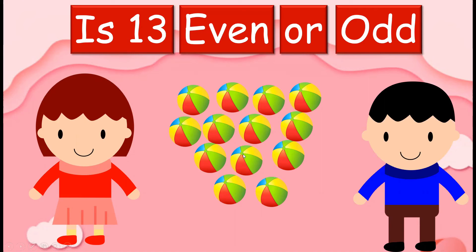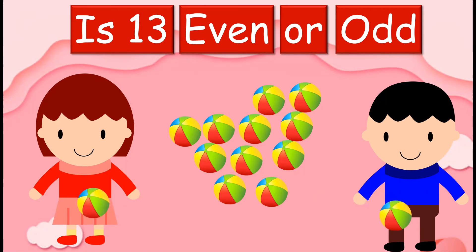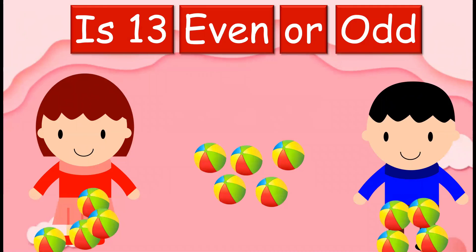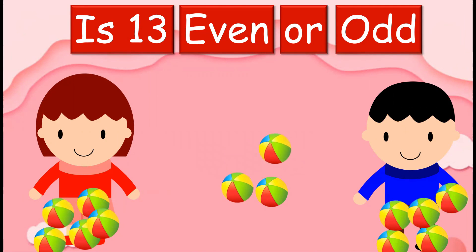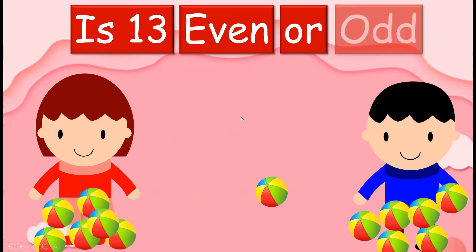Now we are going to make the balls as partners. If all the balls are having partners, then it is an even number. If there are no partners for one ball, then it will become an odd number. Let's see if the balls are having partners. Yes — 1st partner, 2nd partner, 3rd partner, 4th partner, 5th partner and 6th partner. Now this ball is left out. He is not having any partner. So what does that mean? Number 13 is an odd number. 13 will become an odd number because number 13 is not having any partner.